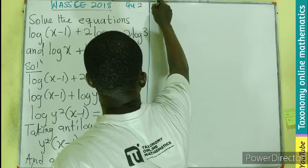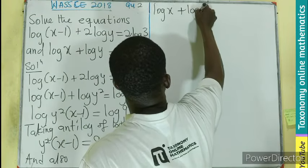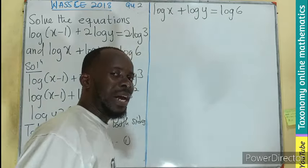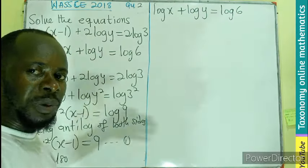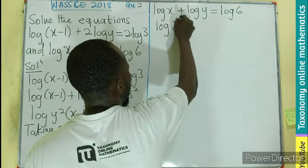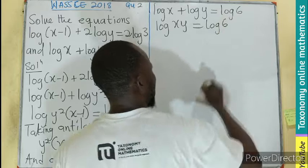If we take the second one, which is log x + log y = log 6. What can you see there? Addition becomes multiplication of the argument. So we have log(xy) = log 6.